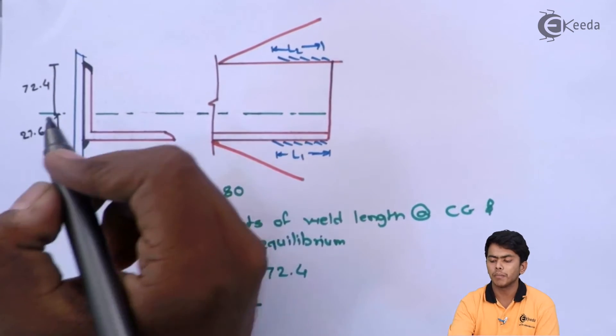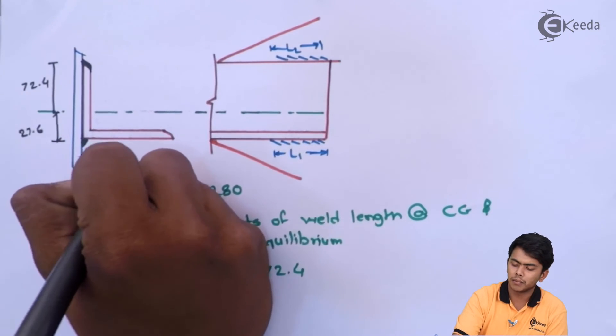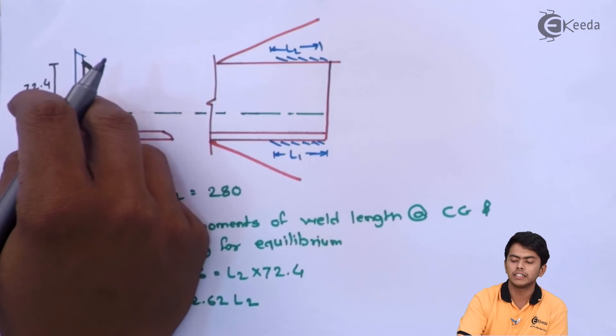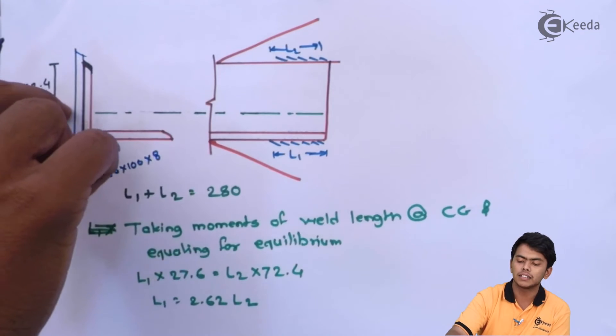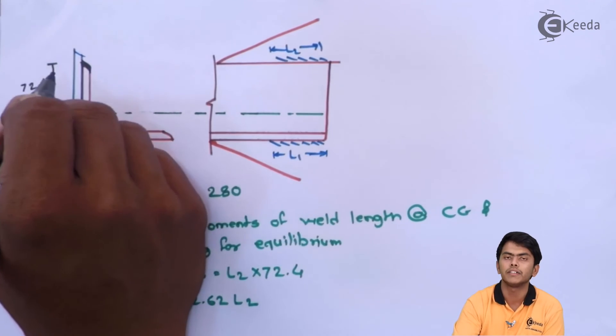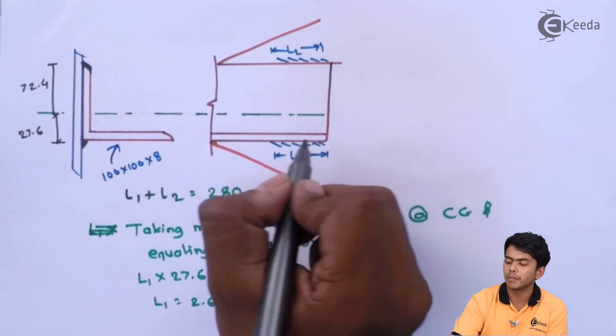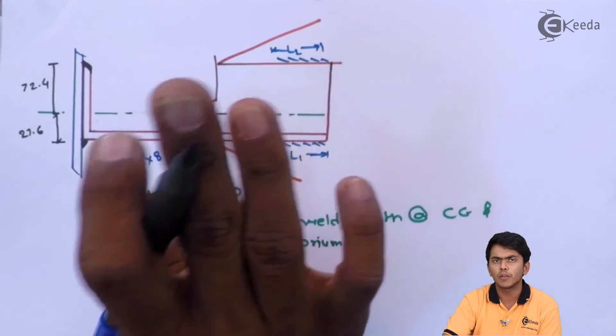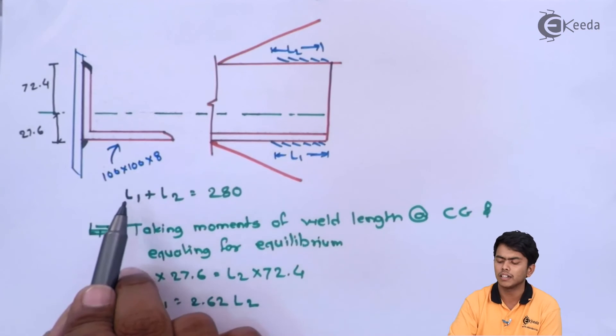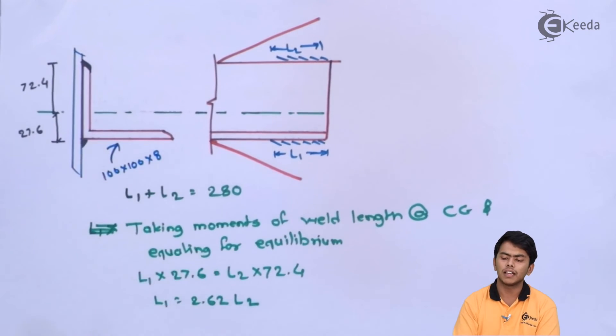Next step, we have to arrange the weld length. Here we have 100 by 100 by 8. This is also 100, this is also 100. We have given CXX which is 27.6. The remaining from the top is 100 minus 27.6, which is 72.4. This green dotted line is passed, then we will provide L1 and L2. We know L1 plus L2 must equal the length required, so L1 plus L2 equals 280 mm.